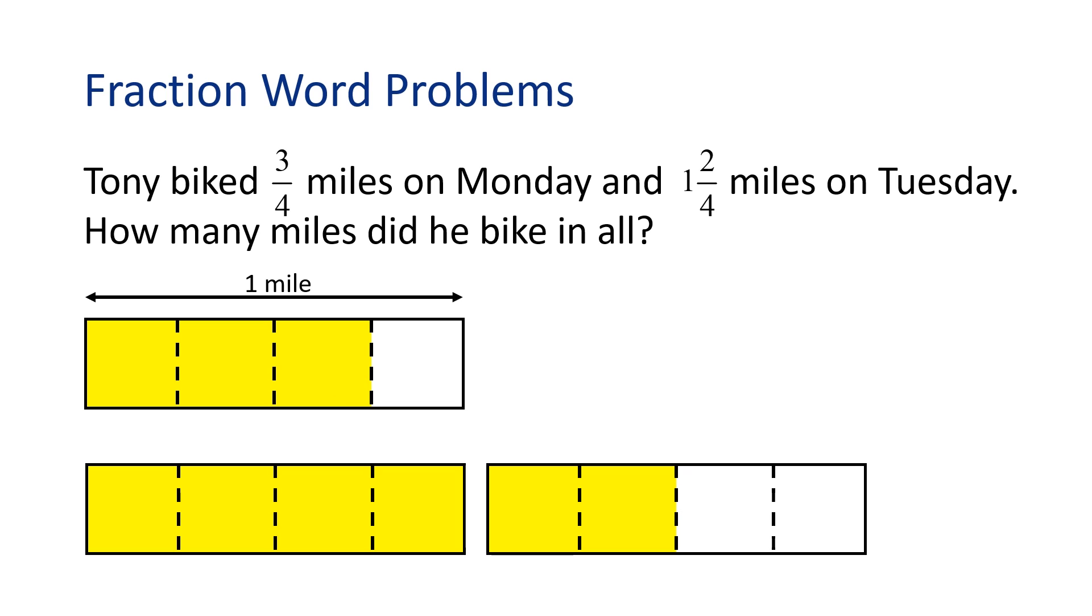To find out how far Tony biked altogether, let's add the shaded pieces together and fill up as many whole rectangles as we can. See how I can take one-fourth from the rectangle below and fill it into the first one? That gives us two whole rectangles and one-fourth. So we have two and one-fourth miles. We found that three-fourths miles plus one and two-fourths miles equals two and one-fourth miles. The picture model was really helpful.